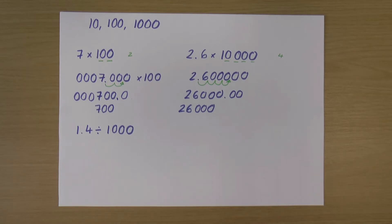Now we can also divide by multiples of 10. So I can divide by 100, by 1,000, etc. So I've got an example here where I've got 1.4 divided by 1,000.